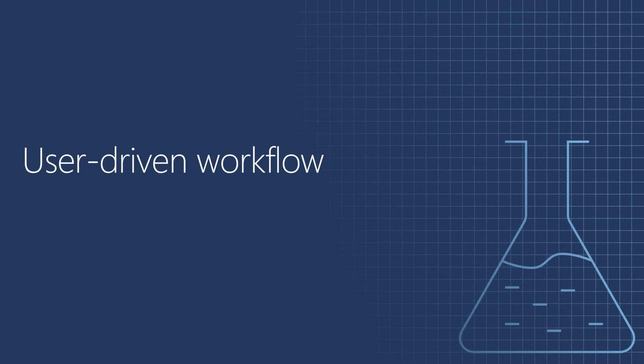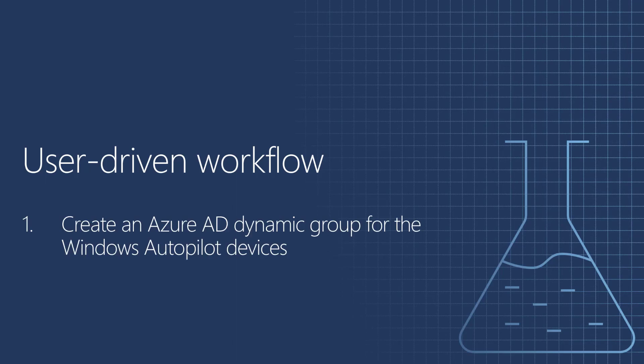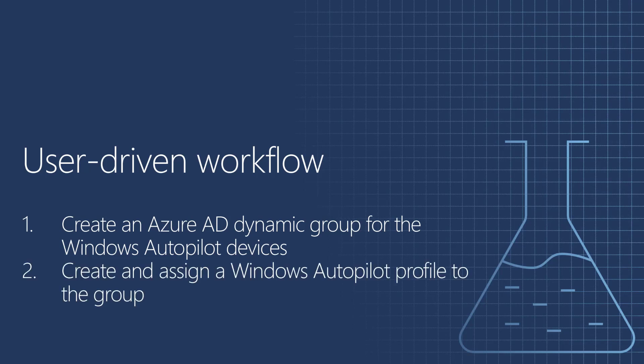We have now seen the IT Pro's experience with the self-deploying mode of Windows Autopilot. In this demo, I'll walk you through the end-to-end flow for configuring a Windows Autopilot user-driven profile with the pre-provision deployment option enabled to allow for pre-caching of apps and policies. We'll begin by creating an Azure AD dynamic group that pulls in all of the devices with a specific group tag that have been registered to the Autopilot service. We'll then create, deploy, and assign a user-driven profile to it, and finish by importing a test device using a CSV containing the hardware hash information.